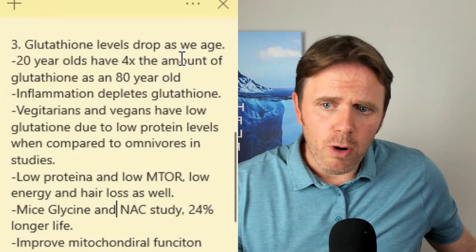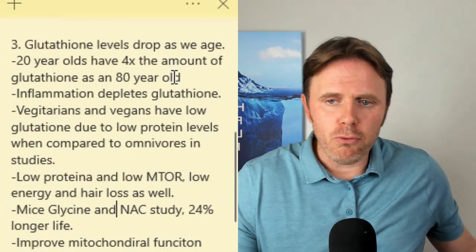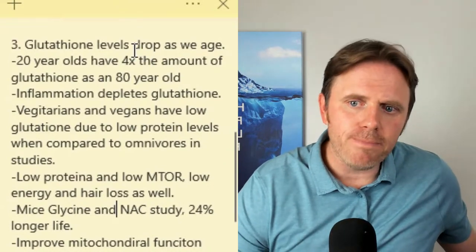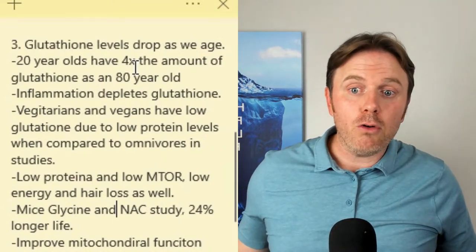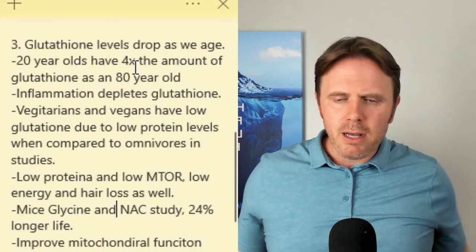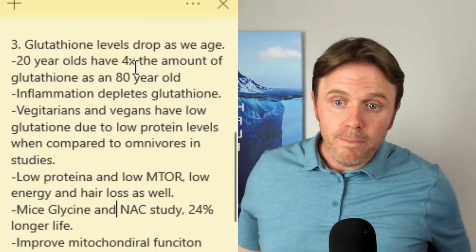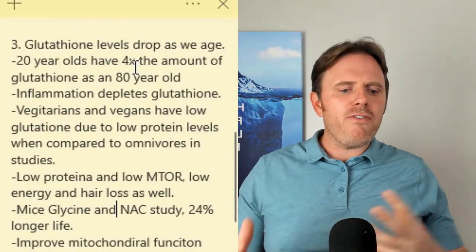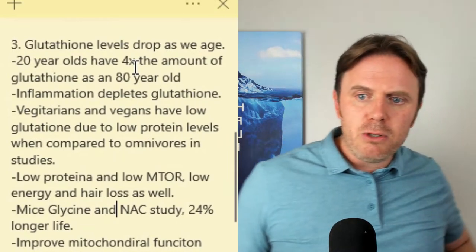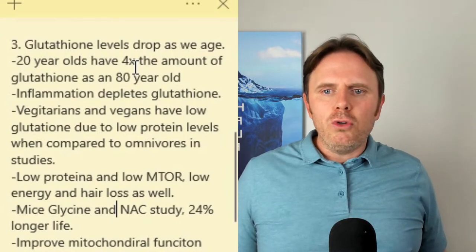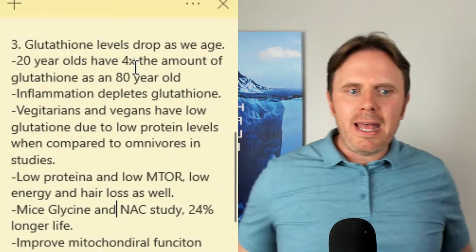Lower protein does have some benefits — lower mTOR. mTOR, mammalian targeted rapamycin, is improved by going low calorie, keeping carbs down, and also protein. Typically mTOR gets knocked out at about 40 grams of protein per meal. I start my day with collagen in my coffee with some butter — around 20 grams — so I keep it on that lower side, don't trigger mTOR, and stay in a somewhat fasting state while still getting some amino acids.